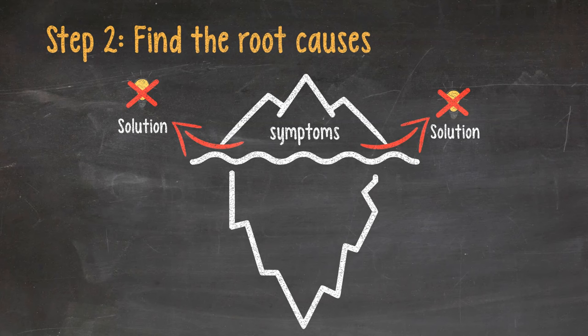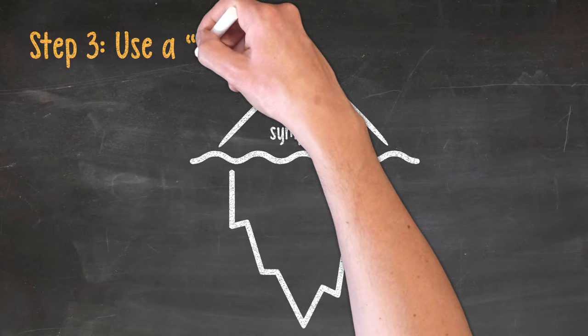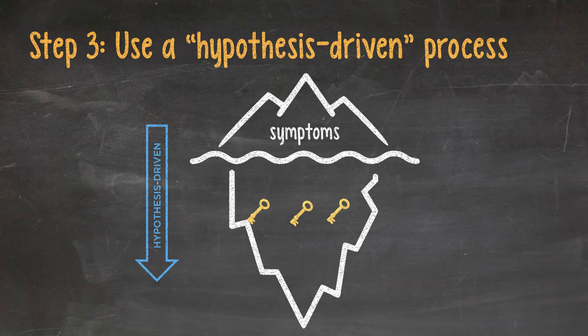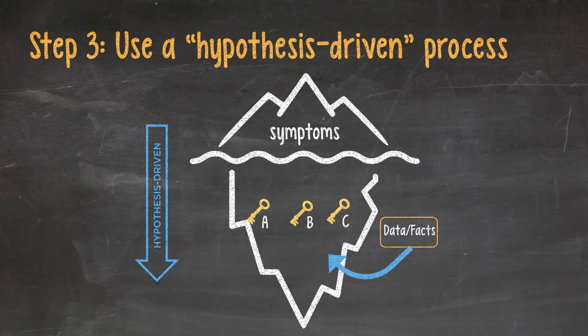Step 2. Know that you need to find the root cause. Don't jump straight to the solution because you might just be fixing the symptoms. The problem will come back if the root cause is not properly dealt with. Step 3. We find the root cause through a hypothesis-driven process. Meaning that we make educated guesses of possible root causes A, B, and C and test those with data, aka facts. That's why people sometimes call this a fact-based process.